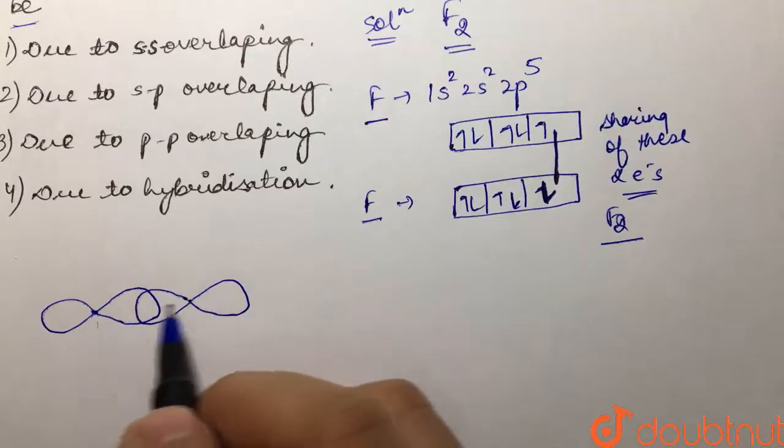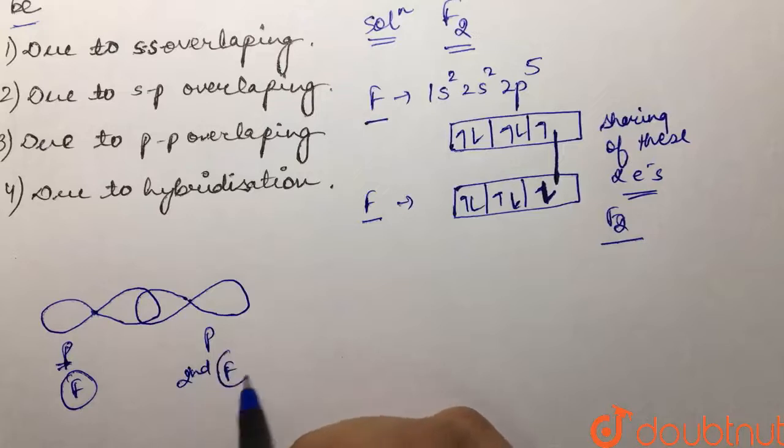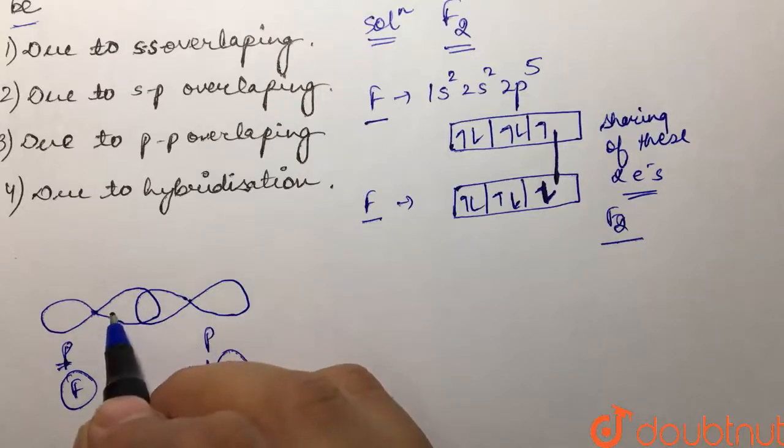This is the p orbital of one fluorine and this is the p orbital of our second fluorine atom. There is overlapping between these p orbitals.